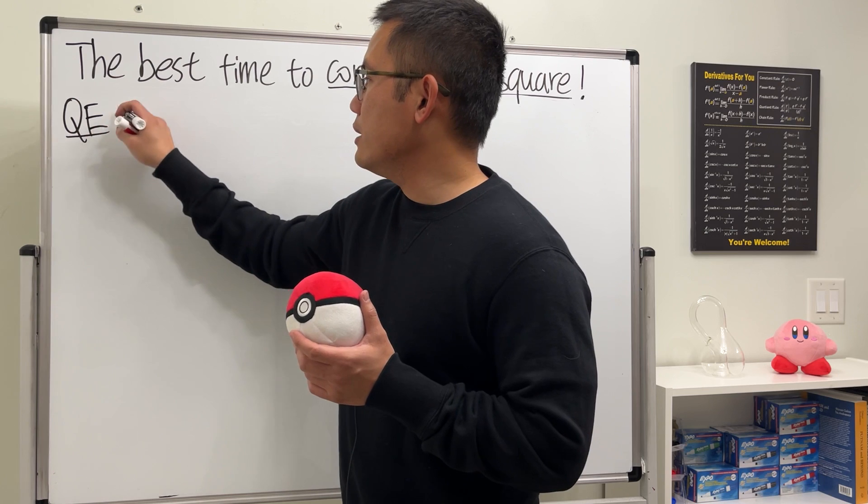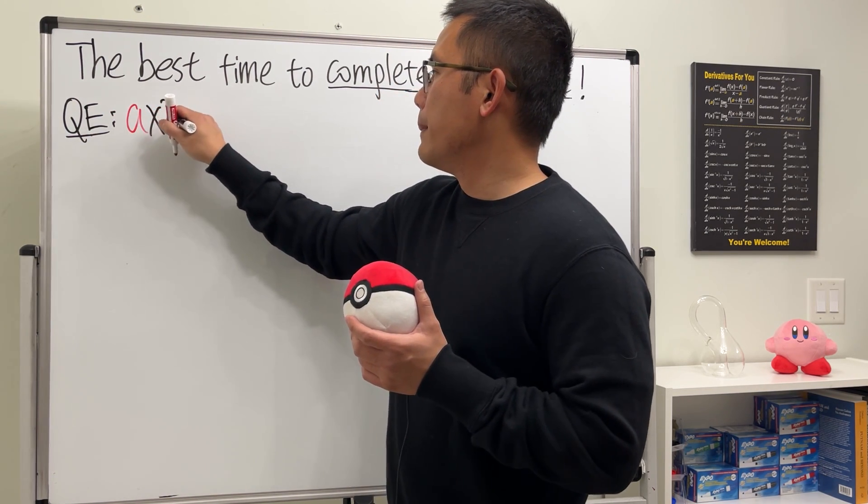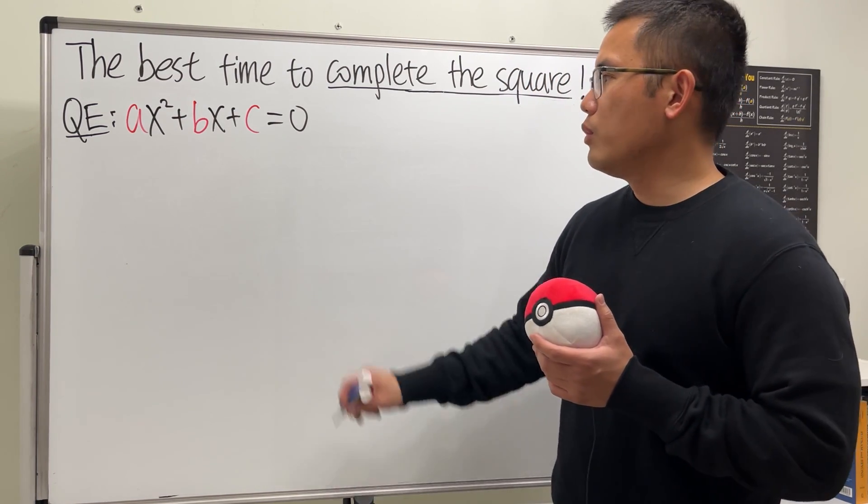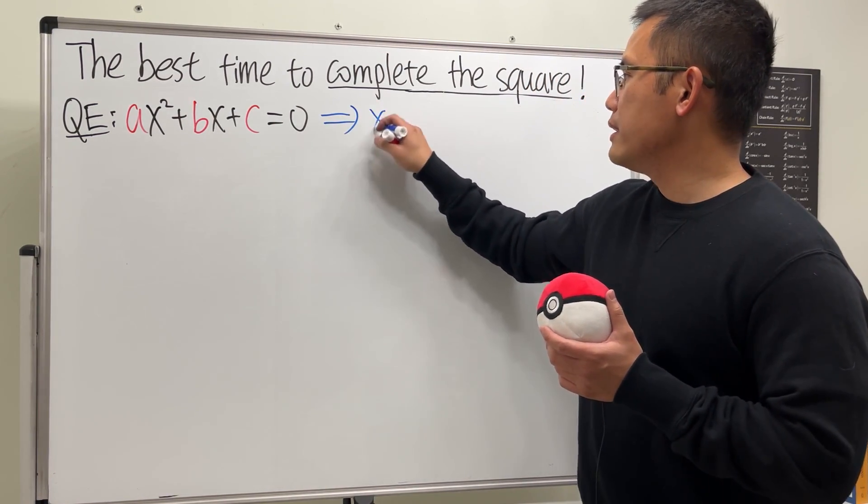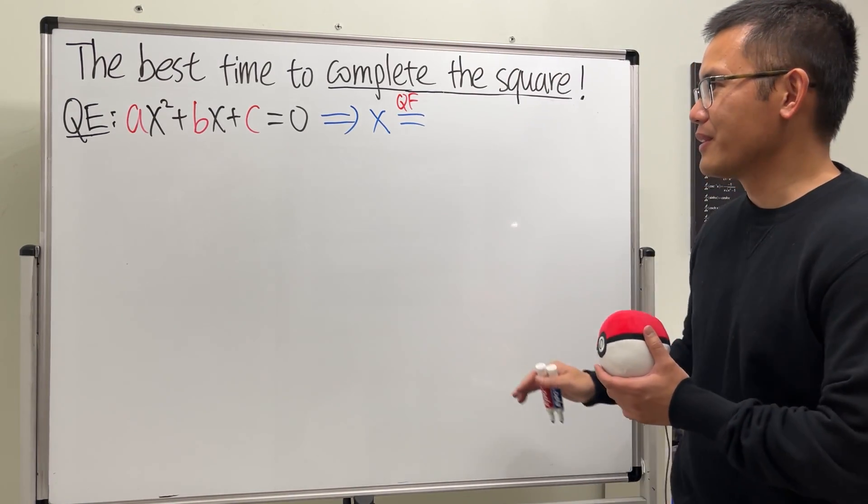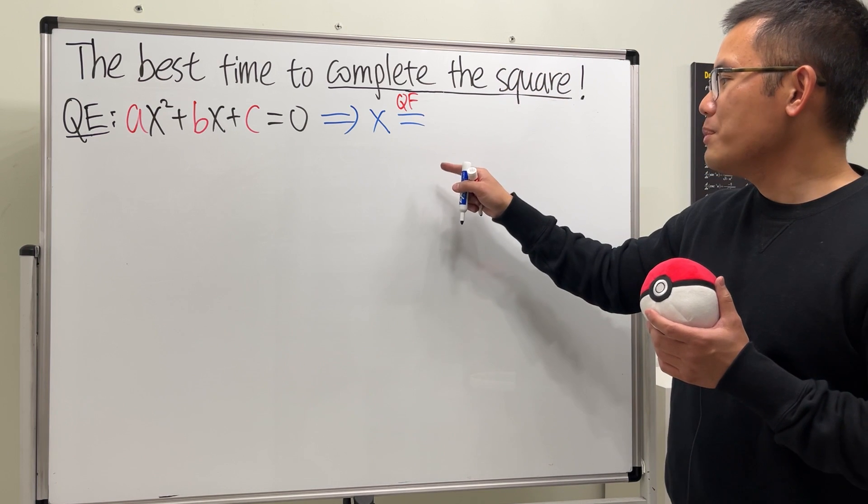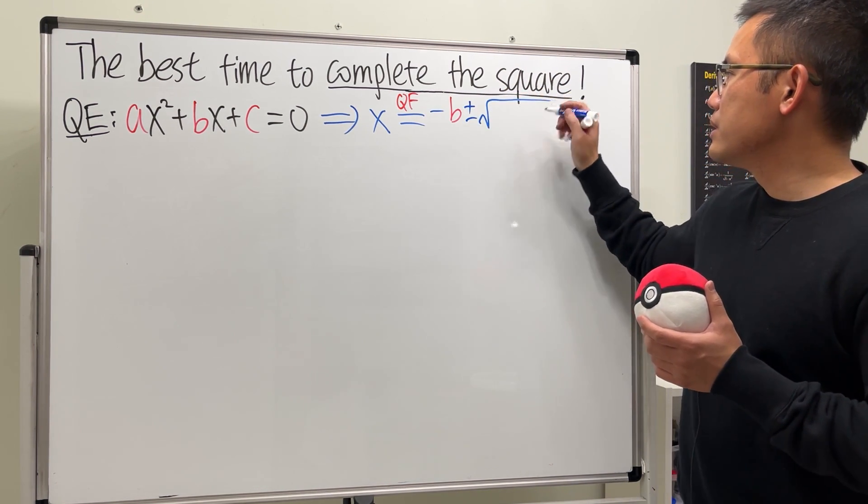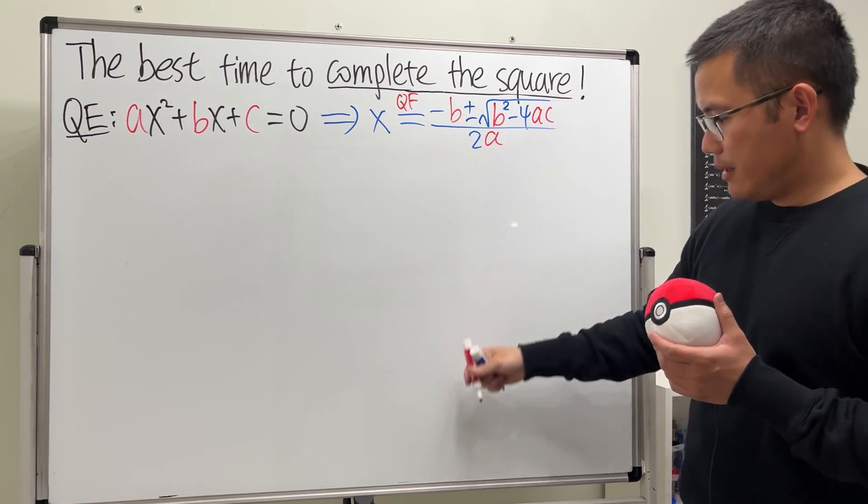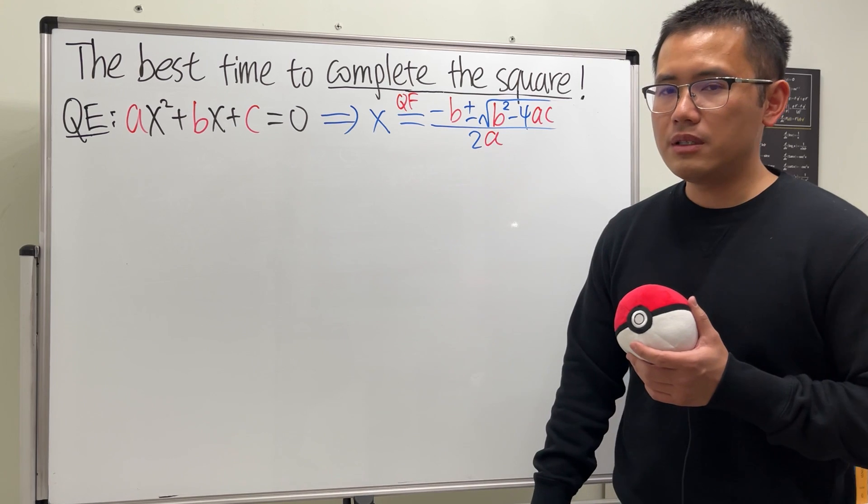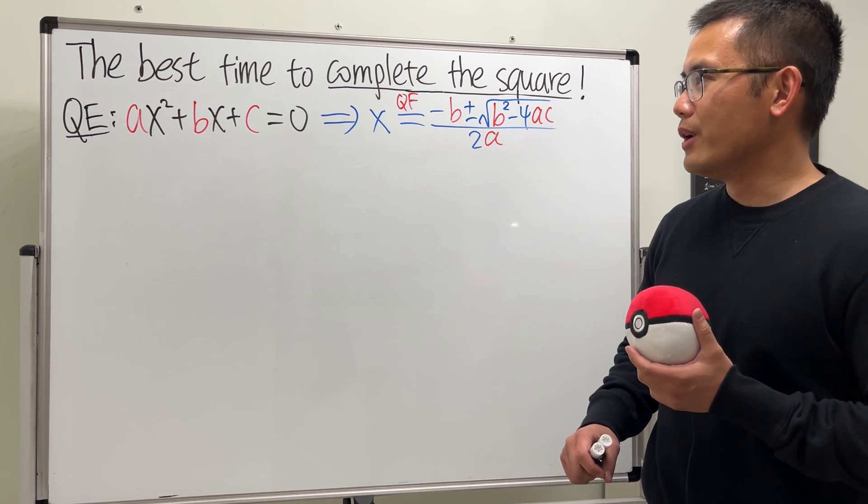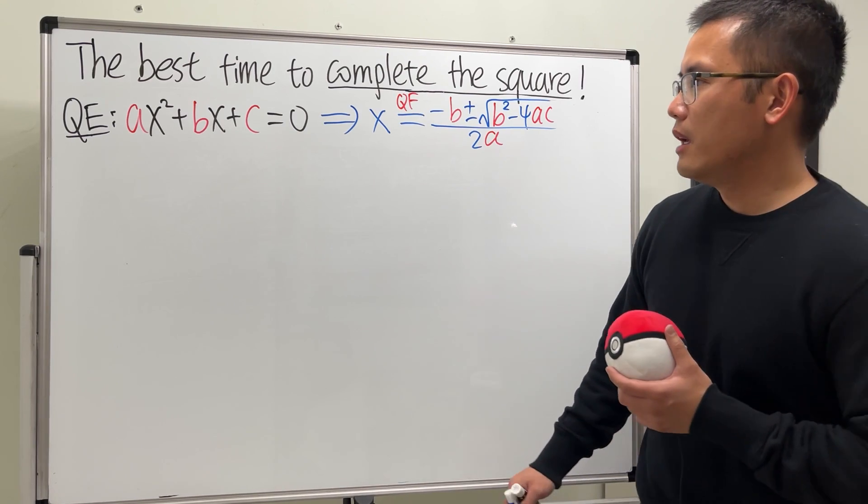When we have a quadratic equation in standard form, say we have ax² + bx + c = 0, of course we can just use the quadratic formula. And if you take some time to remember it, the quadratic formula says we have negative b plus or minus square root of b² - 4ac, and then all over 2a. You can definitely be a quadratic formula expert. But check this out, complete the square will beat the quadratic formula in the following case.